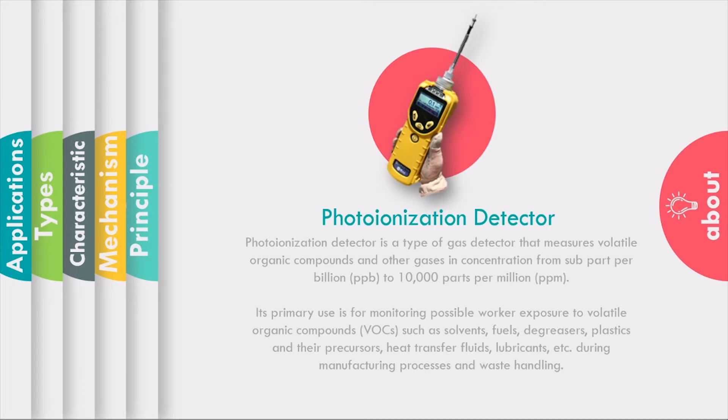To kick off this topic, we should know what is PID. Photoionization detector, or PID, is a type of gas detector that measures volatile organic compounds, or VOCs for short, and other gases in concentration of parts per billion to 10,000 parts per million.